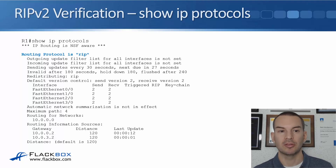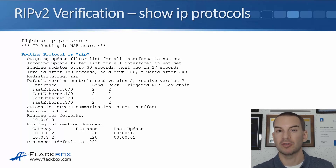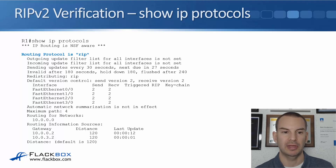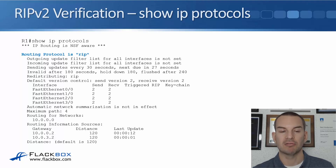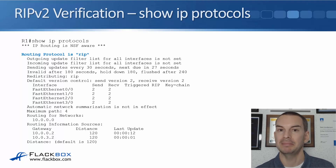In the example output, we can see that the routing protocol is RIP and it's running. We can see the interfaces RIP is running on: FastEthernet0/0, 1/0, 2/0, and 3/0. It's sent and received two updates on those interfaces. It will do equal cost load balancing up to four maximum paths. It's routing for the 10.0.0.0 network and has neighbors at 10.0.0.2 and 10.0.3.2. The administrative distance defaults to 120 for RIP.